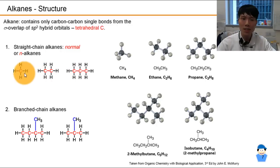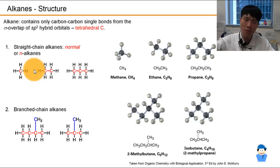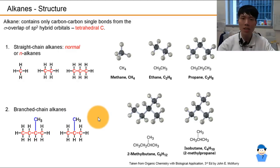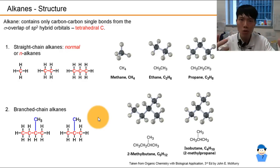Looking at these alkanes in the first row — they are called straight chain alkanes, or normal (N) alkanes. They are called straight chain alkanes because you can connect all the carbons in the molecule using one line without breaking off. In the second row, you see examples of branched alkanes. Branched means you cannot use one line connecting all the carbons — you will miss out some of them. It shows they are branched, like a shell.